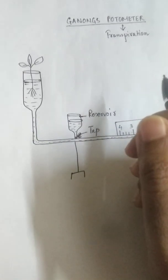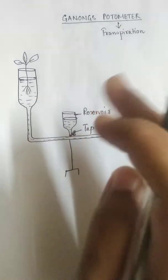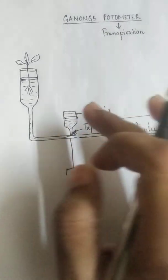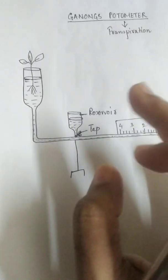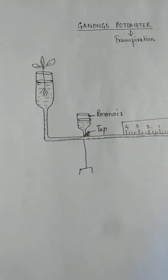That means when I turn on the tap the water from the reservoir flows into the pipe. And when I close the tap the water stops flowing from the reservoir. Now this reservoir also has a very important function.